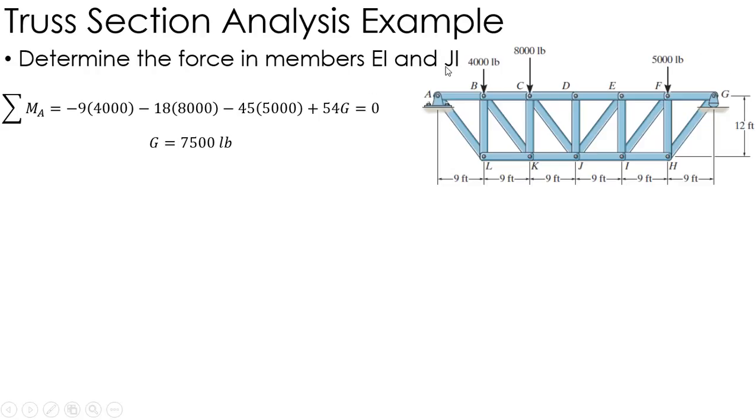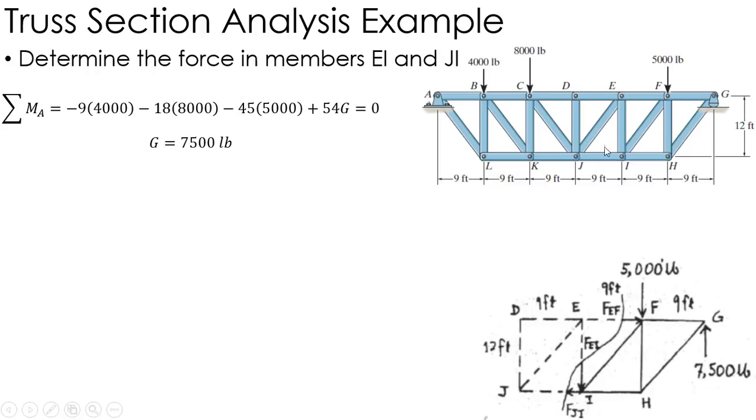Now I'm going to make a cut passing through EI and JI. Actually, they made a cut cutting through EF, EI, and JI, coming down this way.